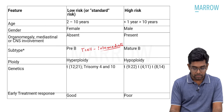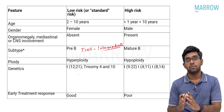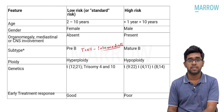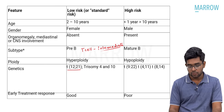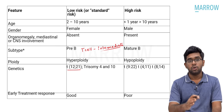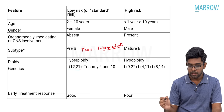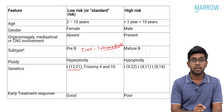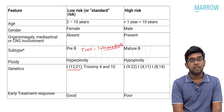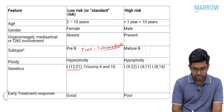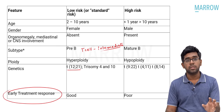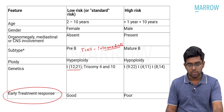Gender: females have good prognosis; males have poor prognosis. Organomegaly, mediastinal or CNS involvement — if present, poor prognostic factor. Subtype: pre-B cell is low/standard risk; mature B cell is high risk; T cell is intermediate risk. Ploidy: hyperploidy is good prognostic; hypoploidy is poor prognostic. Translocations: t(12;21) and trisomies 4 and 10 are good prognostic. t(9;22), t(8;14), and t(4;11) are all high risk or poor prognostic. Early treatment response is one of the most important prognostic factors.